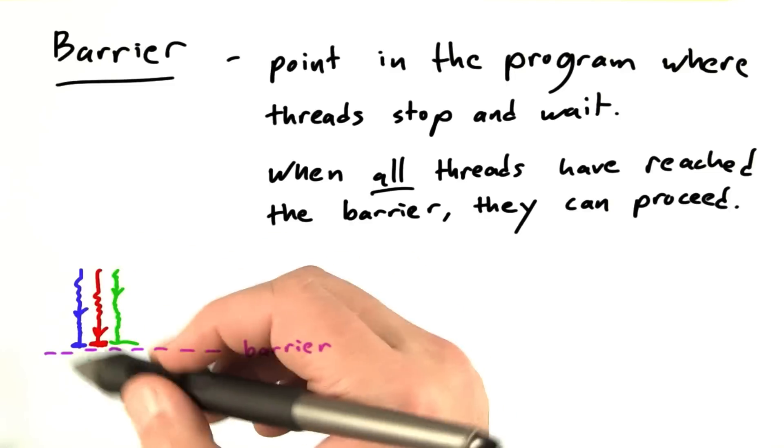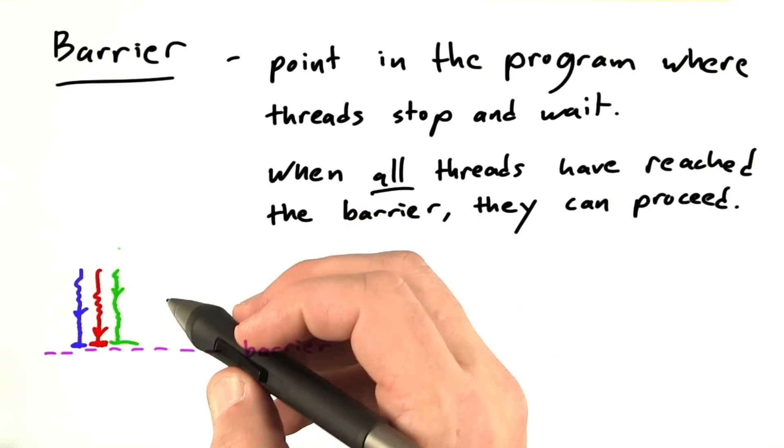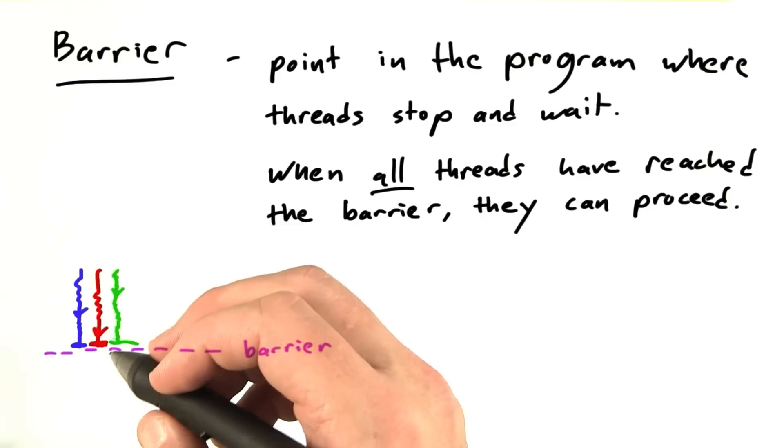And now, all three threads in my example, say I only had three threads. Now that all of the threads have arrived at the barrier, then they're all free to go again.